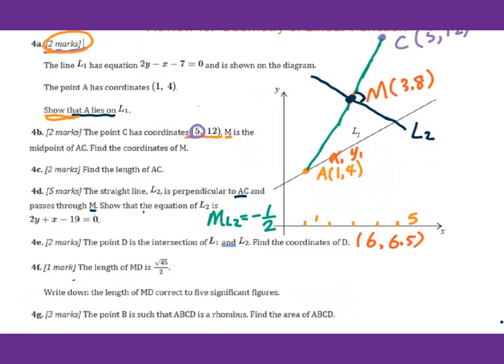Now let's go to 4g. The point B is such that ABCD is a rhombus. Find the area of ABCD. So we see this is B. We connect. If we are looking for the area of this rhombus, we can divide it into two triangles. This is one triangle. Then you multiply by two to get the area of the rhombus.